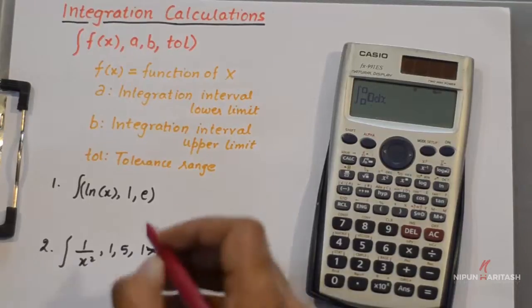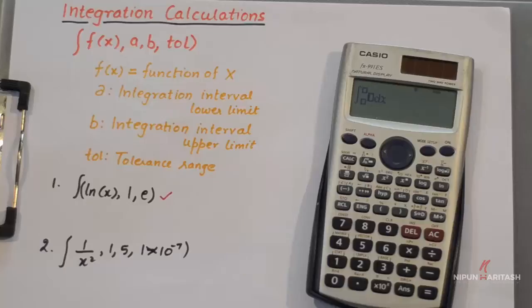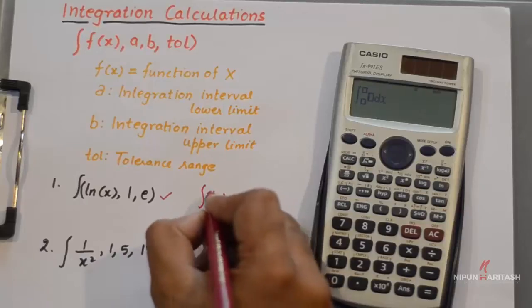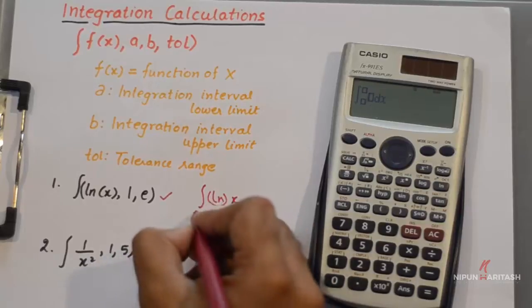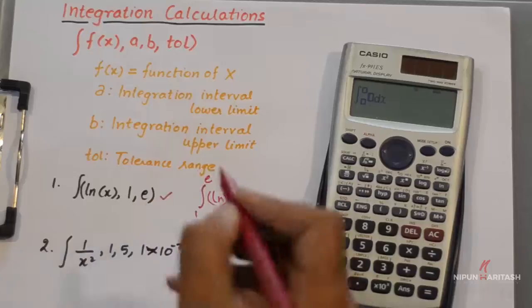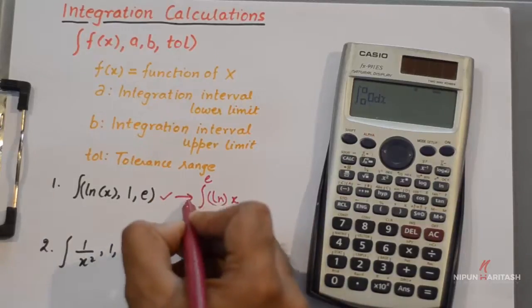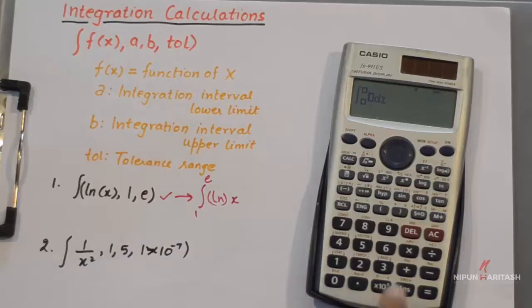So let us perform first operation. Let us say we want to find integration of natural log of x and the range is 1 to e. So this problem is equivalent to this. So how can we do that?